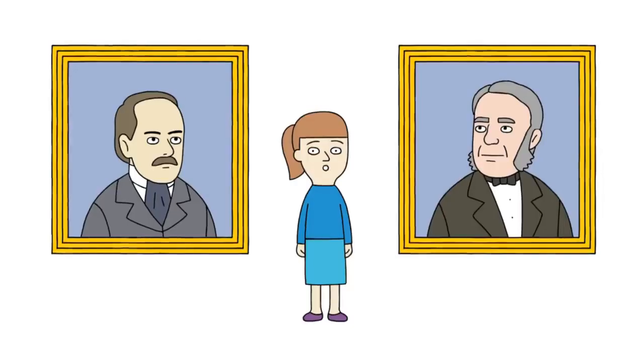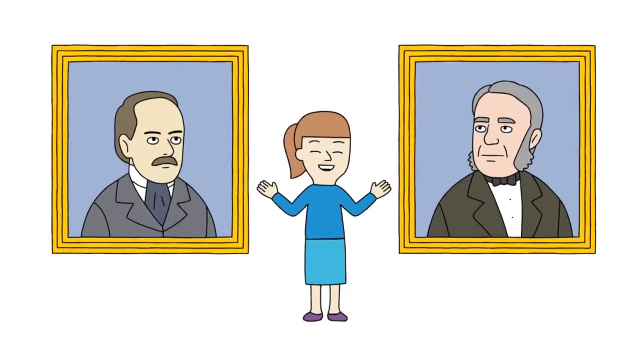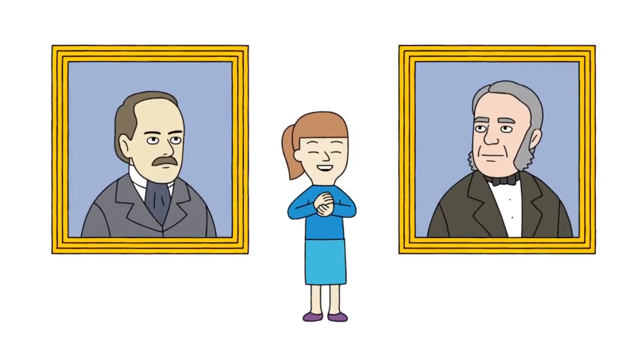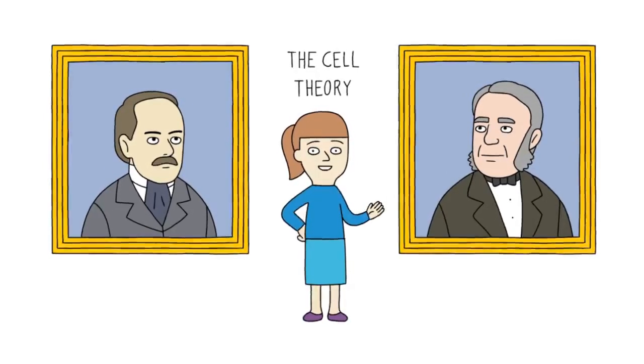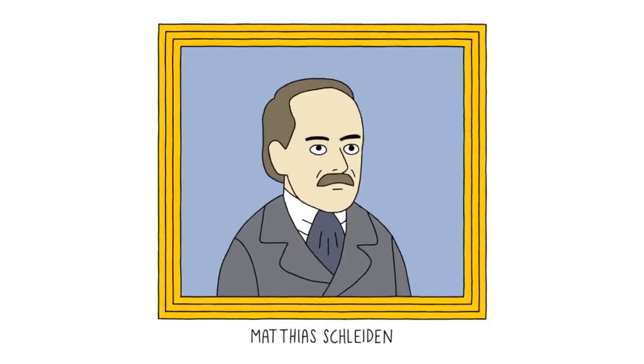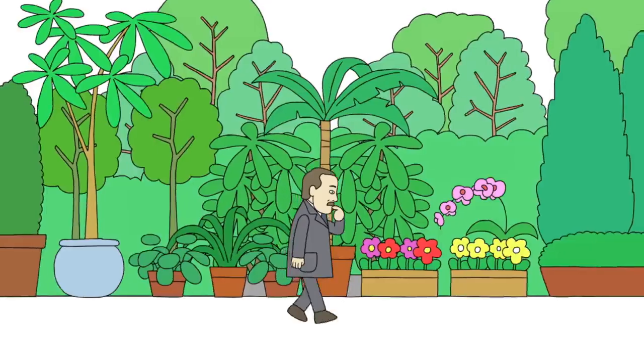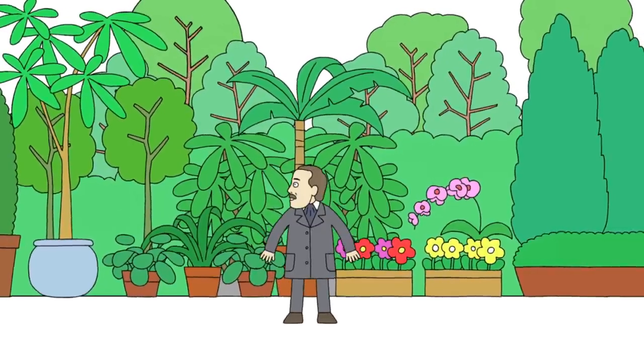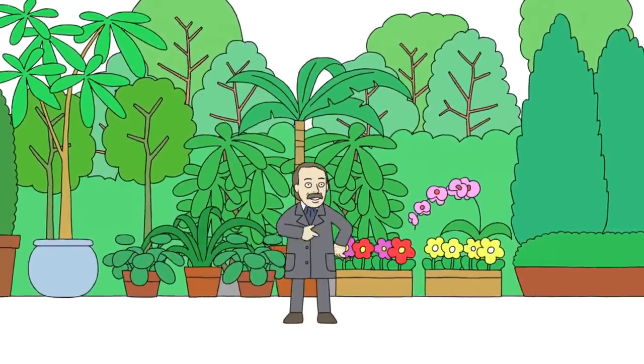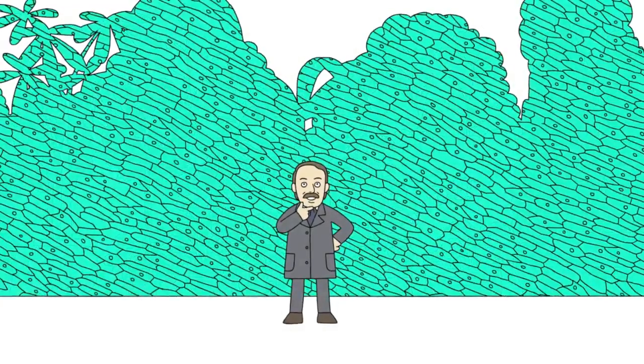Fast forward to the 1800s, where two German scientists discovered something that today we might find rather obvious, but helped tie together what we now know as the cell theory. The first scientist was Matthias Schleiden, a botanist who liked to study plants under a microscope. From his years of studying different plant species, it finally dawned on him that every single plant he had looked at were all made of cells.